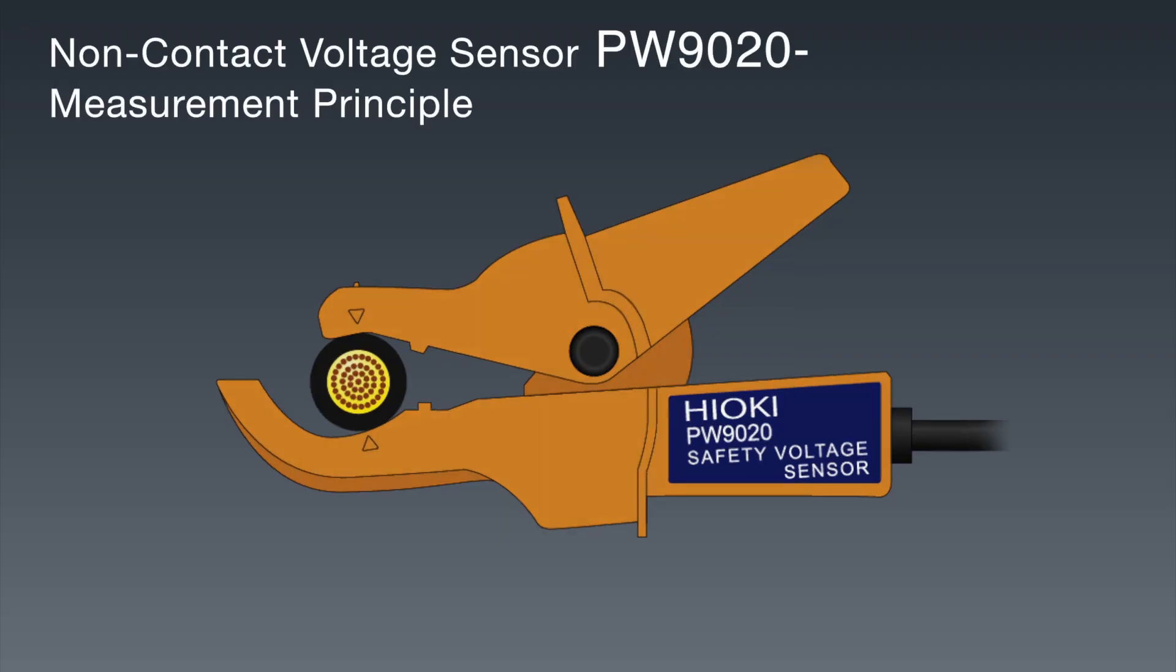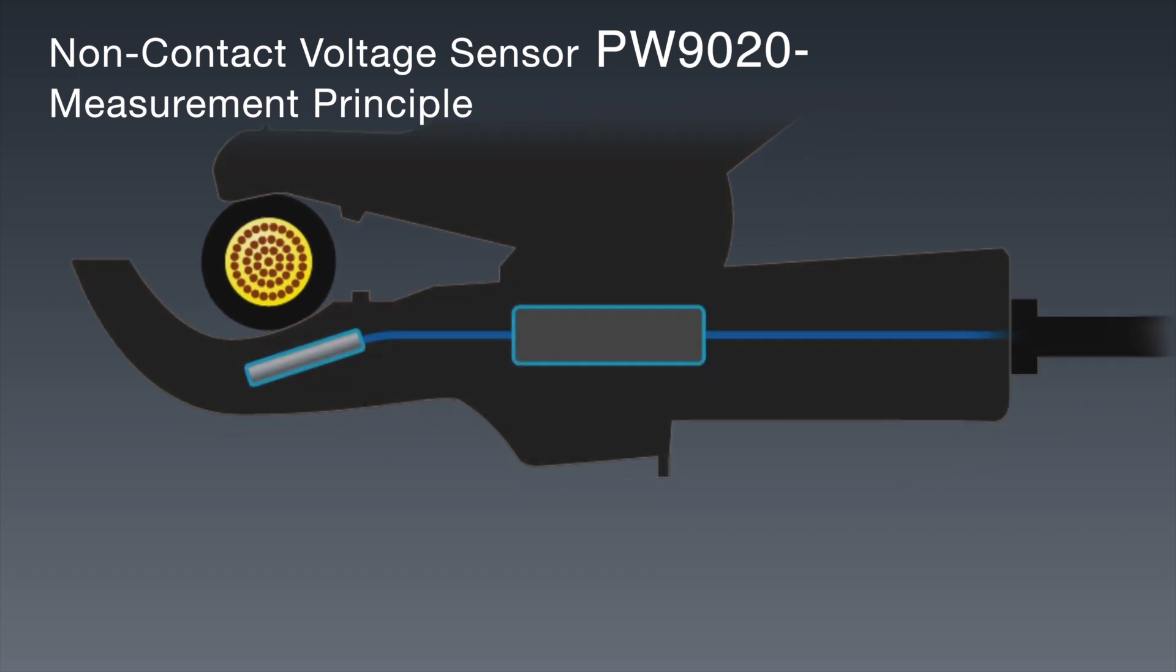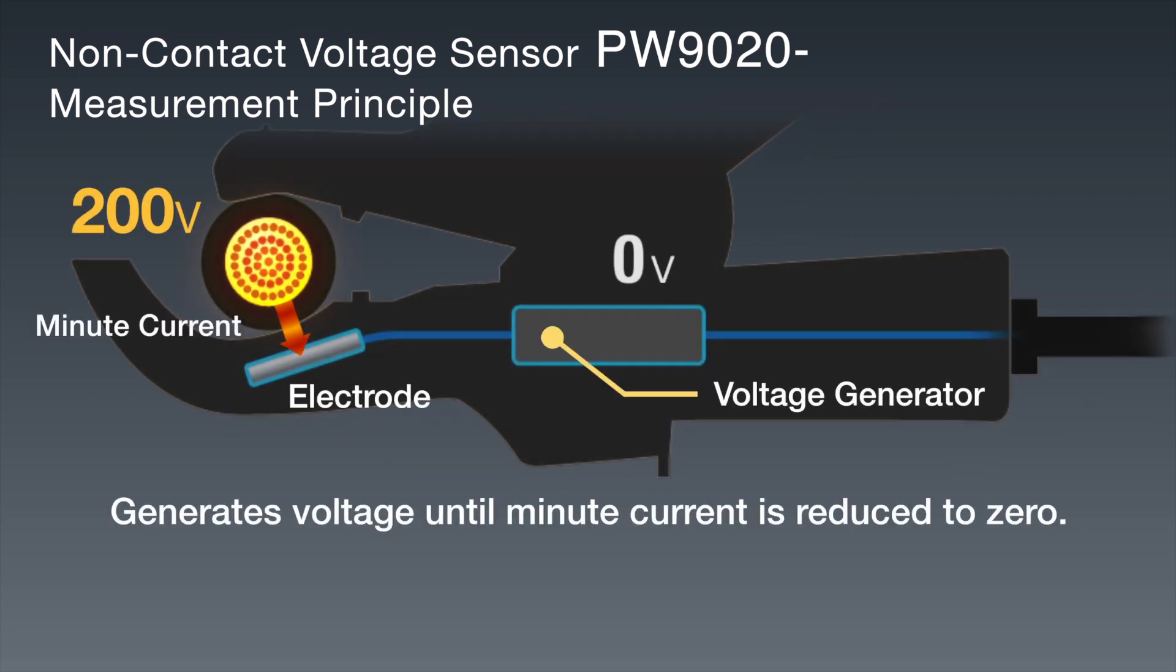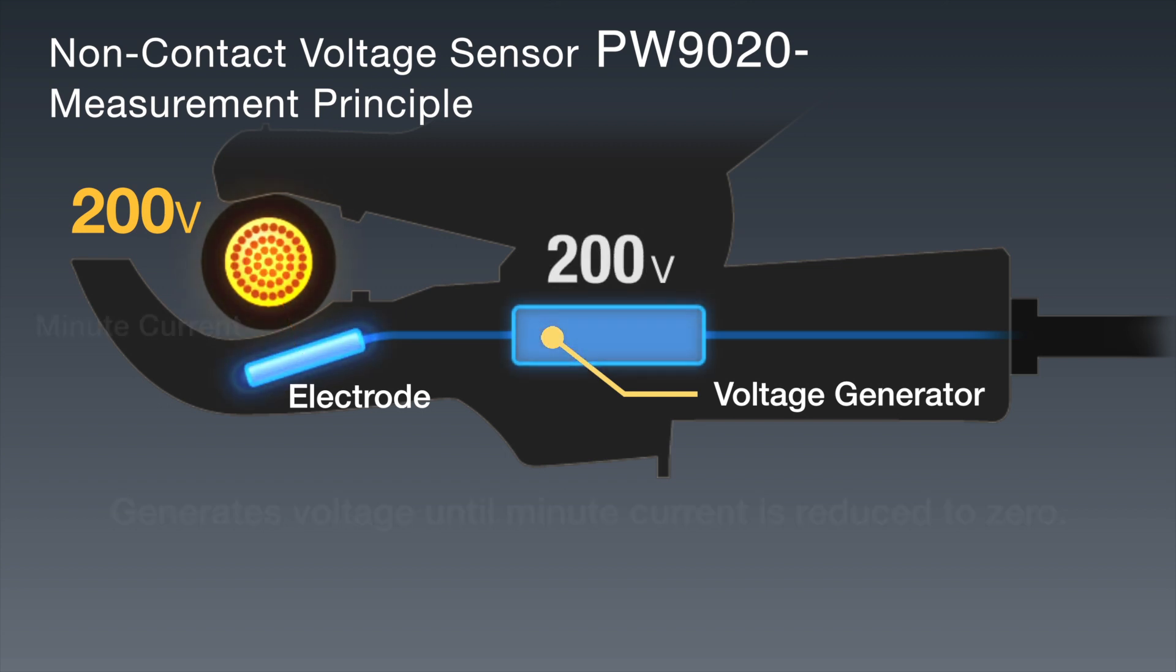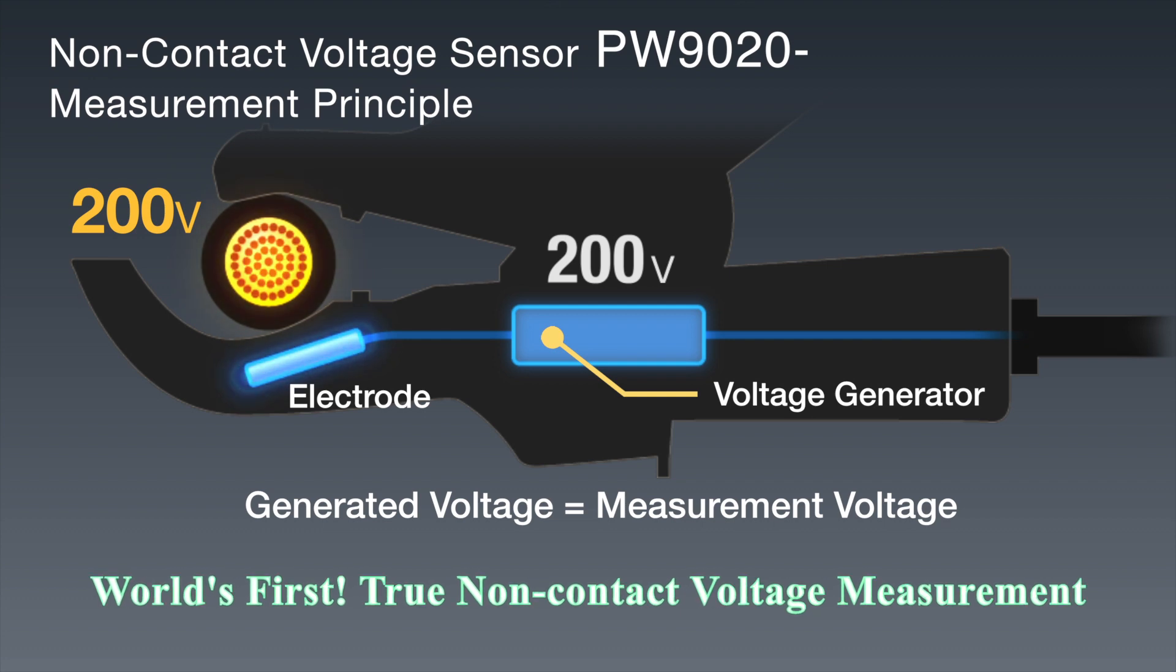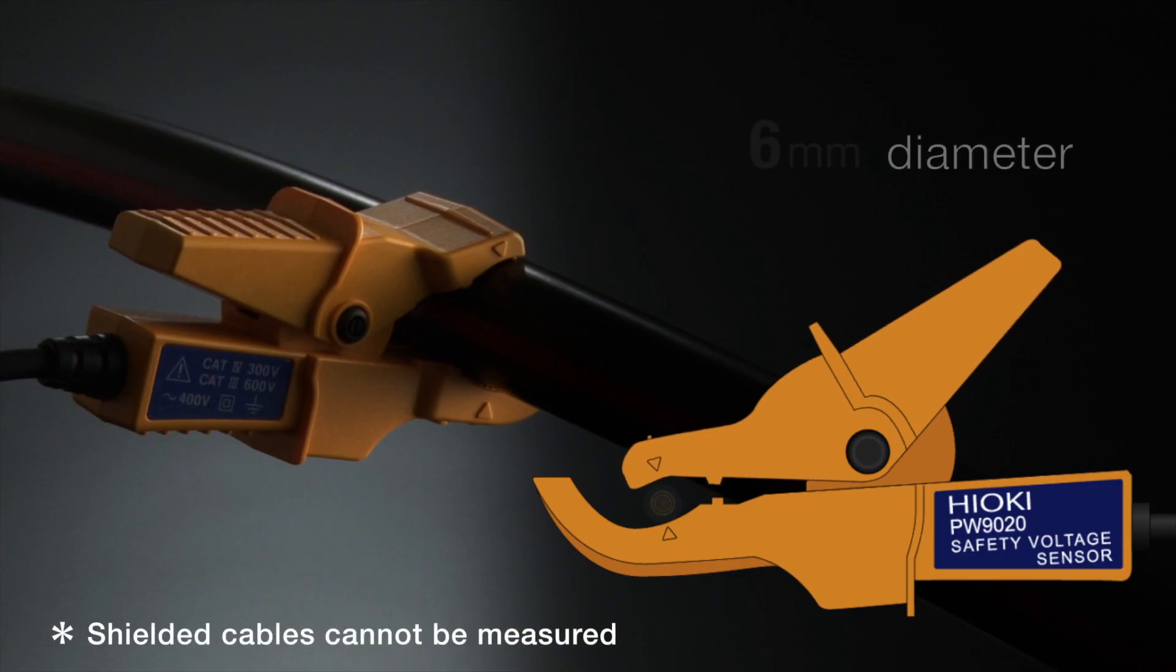So how does it work? When you measure a conductor, the voltage sensor detects the electrical potential, which is then compared to that of the electrode embedded into the sensor and a small current is produced. Then, just enough voltage is generated to reduce the current to zero and that very voltage represents the amount flowing through the cable.